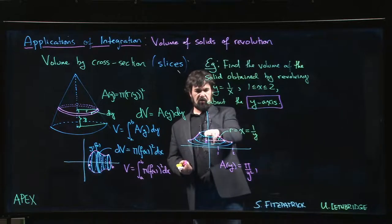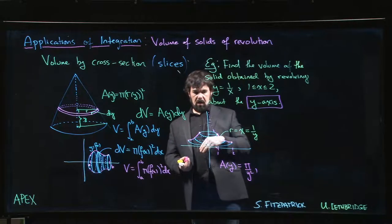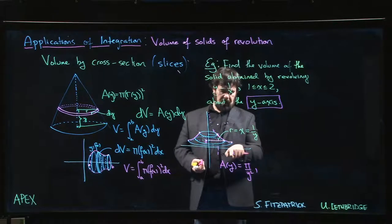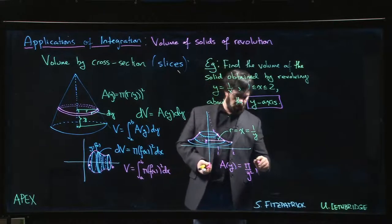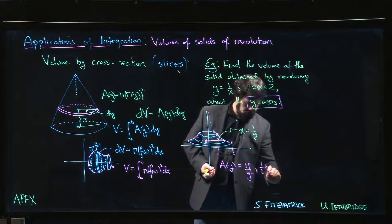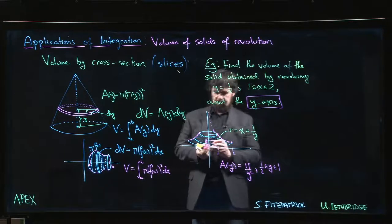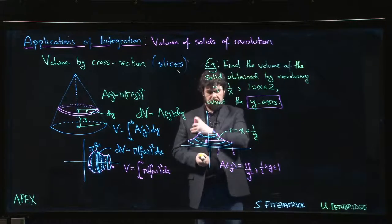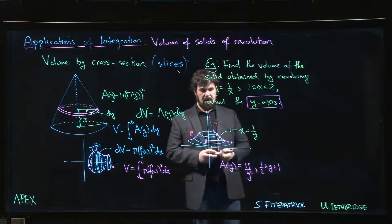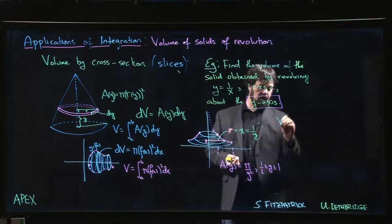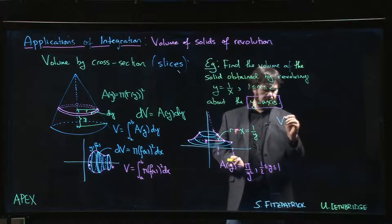We realize, well look, the biggest y value—because we're dealing with this reciprocal function—the largest y value is actually at 1. When x is equal to 2, y is equal to 1 half, so y is between 1 half and 1. With that in mind we can set up the volume now, and the rest is pretty similar to what we did the last time around.